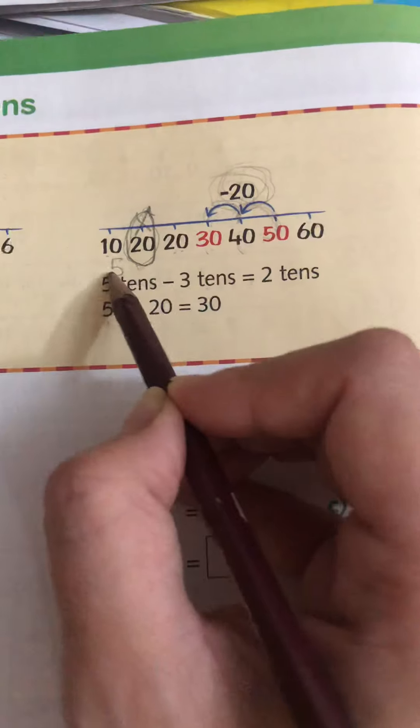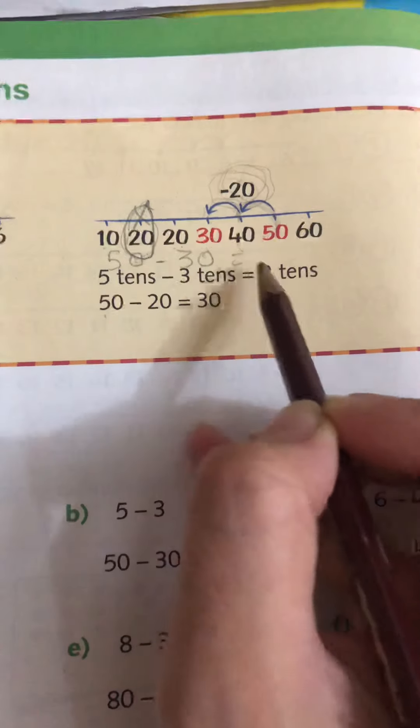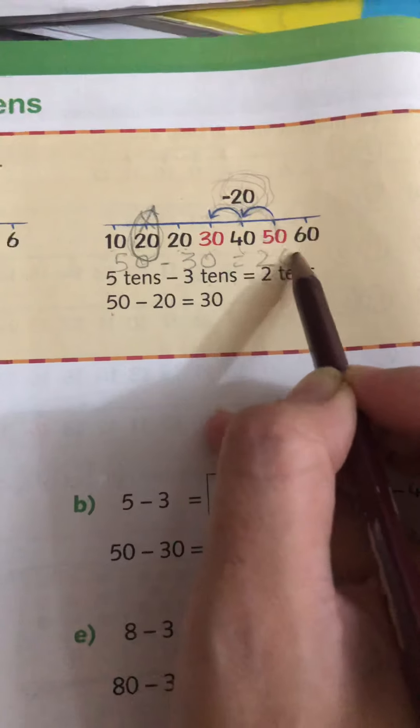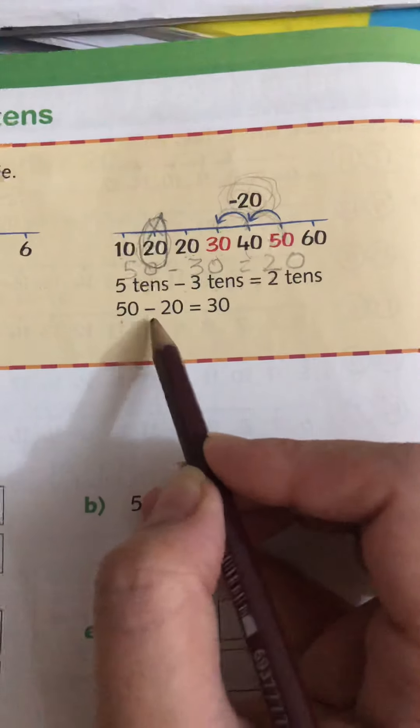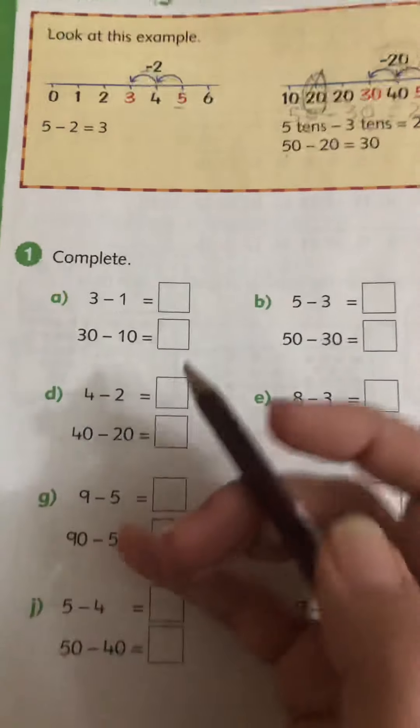5 tens is 50 minus 3 tens is 30, equals 20. Easy peasy. So 50 minus 20 equals 30. Now let's complete this one.